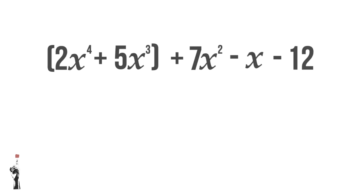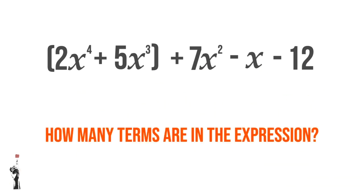Let's do another example. Here we have 2X to the power of 4 plus 5X cubed, all in brackets, plus 7X squared minus X minus 12. That seems like a lot, but let's take it step by step. How many terms are in the expression?